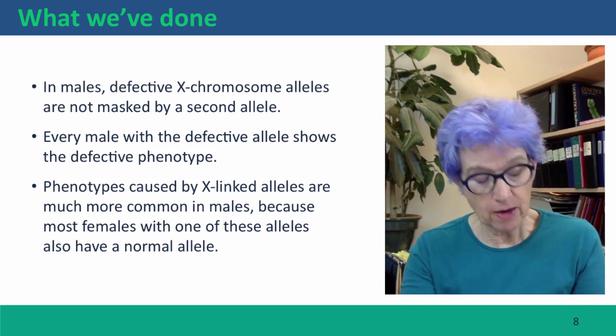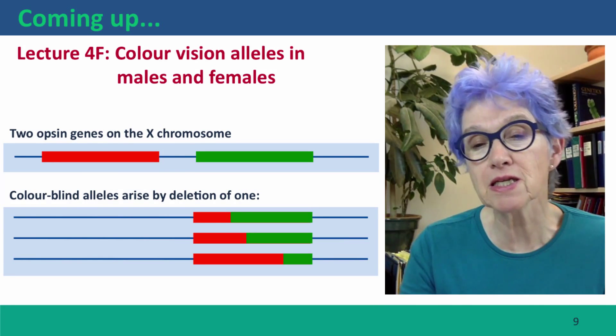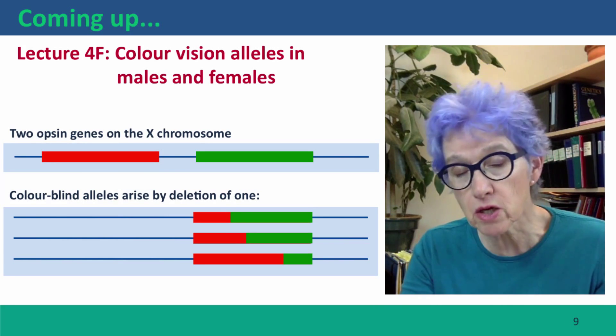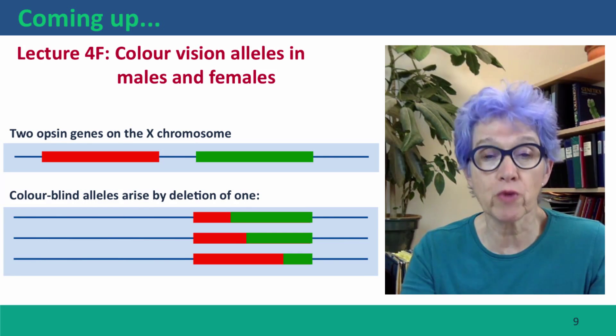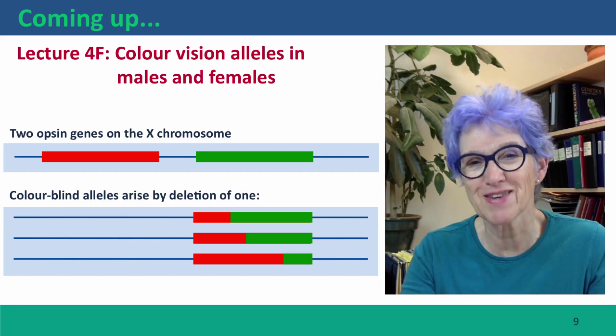Now, coming up next, we're going to consider the mechanism that causes a particular X-linked phenotype, and that's that of red-green colorblindness. I hope to see you there.